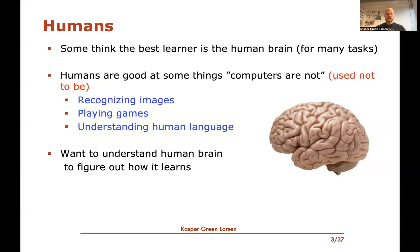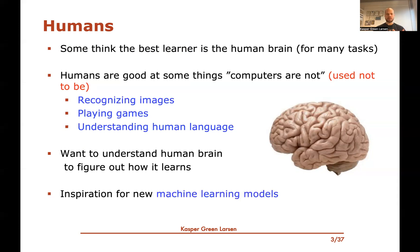So basically, the idea behind neural nets is to understand how the human brain works, to figure out how it learns, and then use that as inspiration for designing a machine learning model. And this is basically where neural networks come into play.